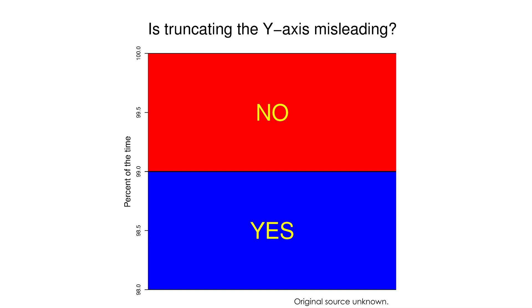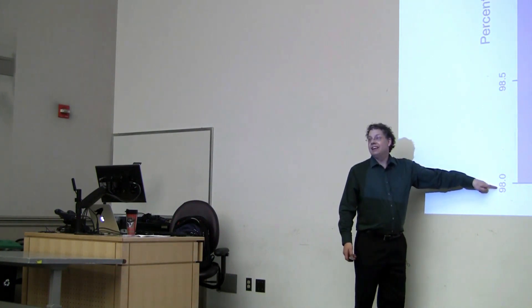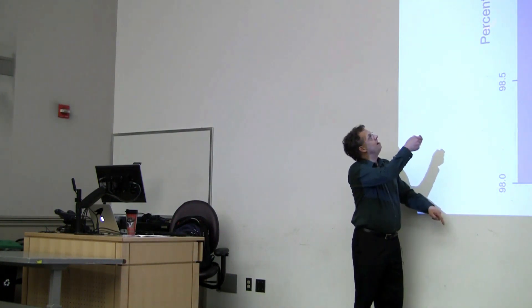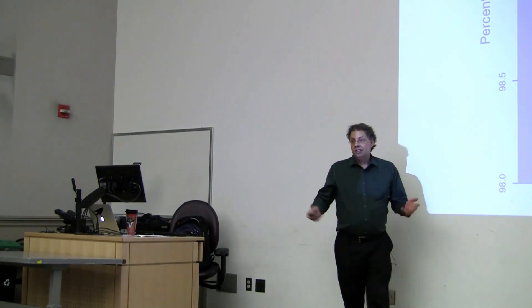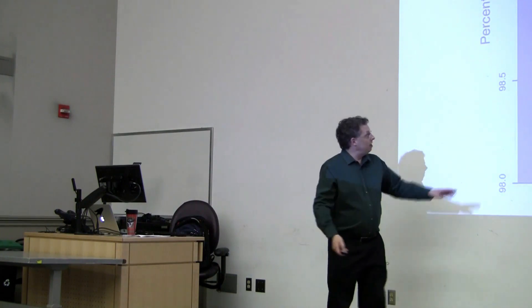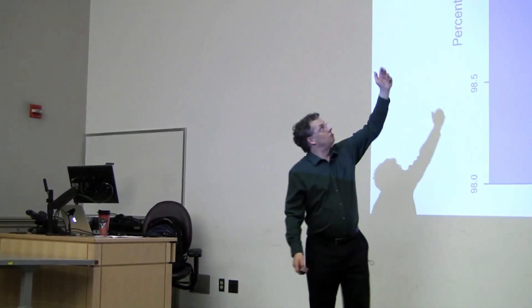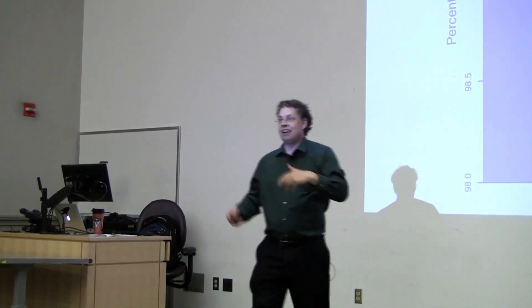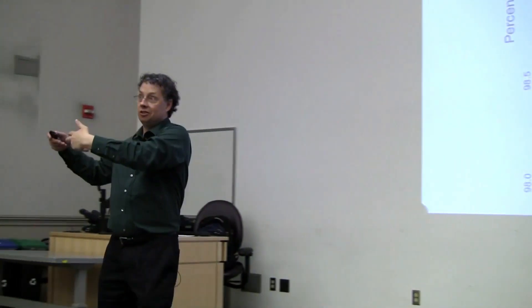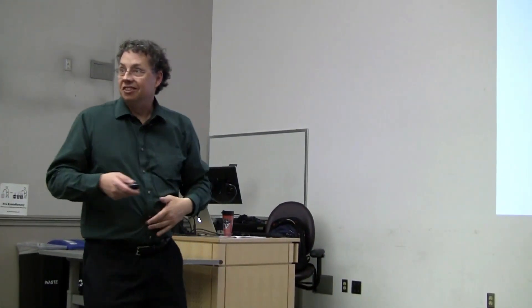So is that misleading? If you look at this graph, you might say 50-50 — maybe sometimes it is, sometimes it isn't — except for the fact that this axis has been truncated. This is 98 right here, that's 99, there's 100. So what this graph is actually saying is that 99% of the time it is misleading to truncate the y-axis. Here's a graph that illustrates its own point very convincingly.